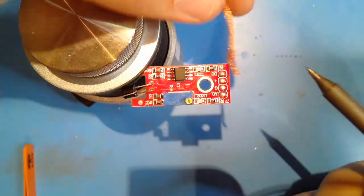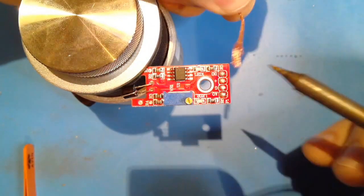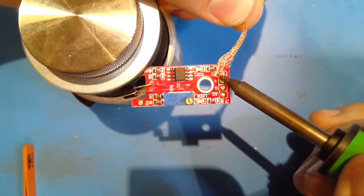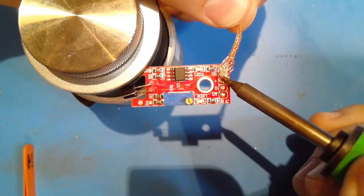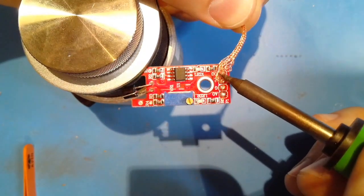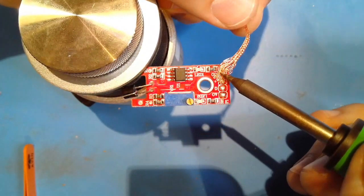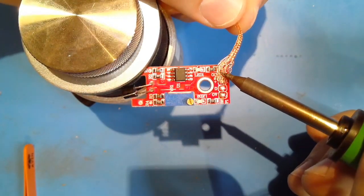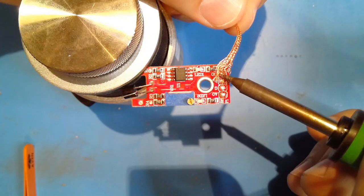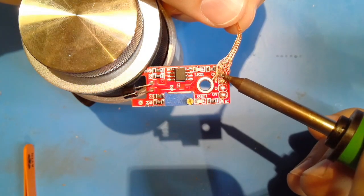There are three primary desoldering methods. The first is solder wick or solder braid. It is most useful for removing solder from surface mount joints. Place the wick on top of the solder to be removed and then place the soldering iron on top of the wick. Once melted, it should flow onto the braid.